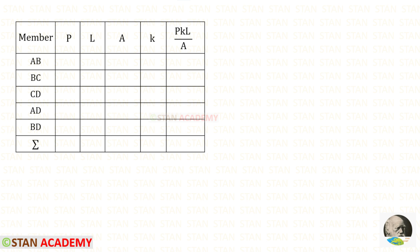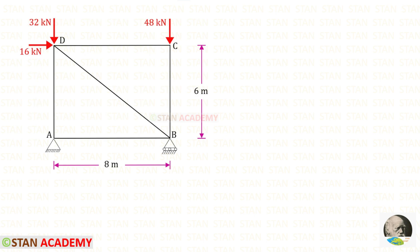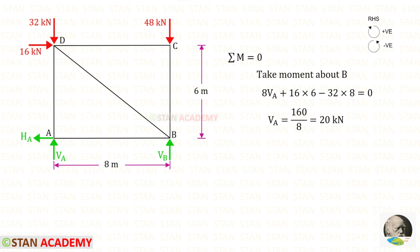We have to make a table. In the table, first we need to enter all of the members, then we have to find the values of P — those are the values of member forces. Before that, we need to find the reactions. At point A there is a hinged support, so there will be two reactions, and at B we have a roller support, so there is only a vertical reaction.